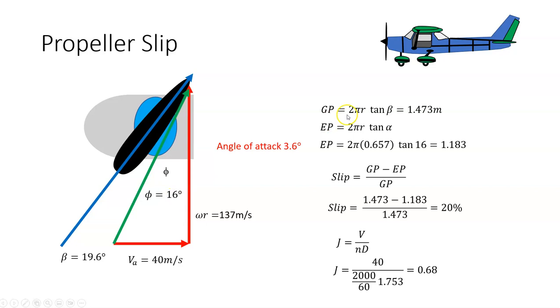Just to conclude, we have a blade angle and an angle of advance, so we can calculate the geometric pitch. We were told that was 58 inches, which is 1.473 meters. The effective pitch is 2 pi r tan of 16 degrees, which works out to be 1.183. So the slip is the geometric pitch minus the effective pitch all over geometric pitch, and that works out to be 20%. We're saying the propeller is about 80% efficient.